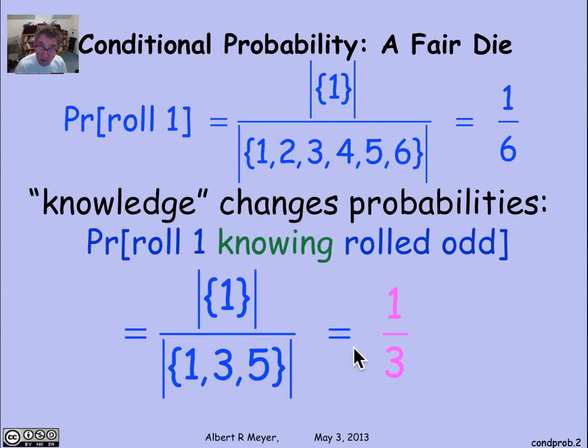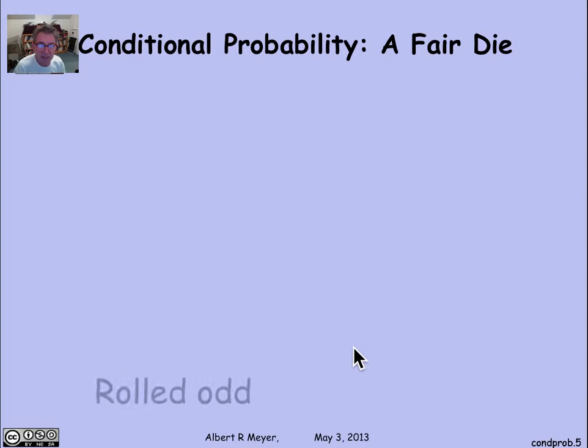Now, that should be a straightforward enough idea. Let's look at it though. One way to understand conditional probability is as a kind of an experiment, where first you try to roll an odd number, and then you decide what final roll you're going to make.